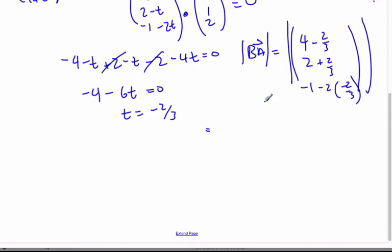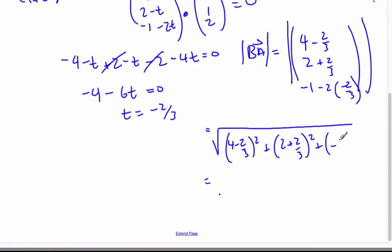Well, if I use my calculator, I'm going to do the square root. And so I go 4 minus 2 thirds squared, plus 2 plus 2 thirds squared, plus negative 1 minus 4 thirds squared, and I believe I get 4.28 as my answer.